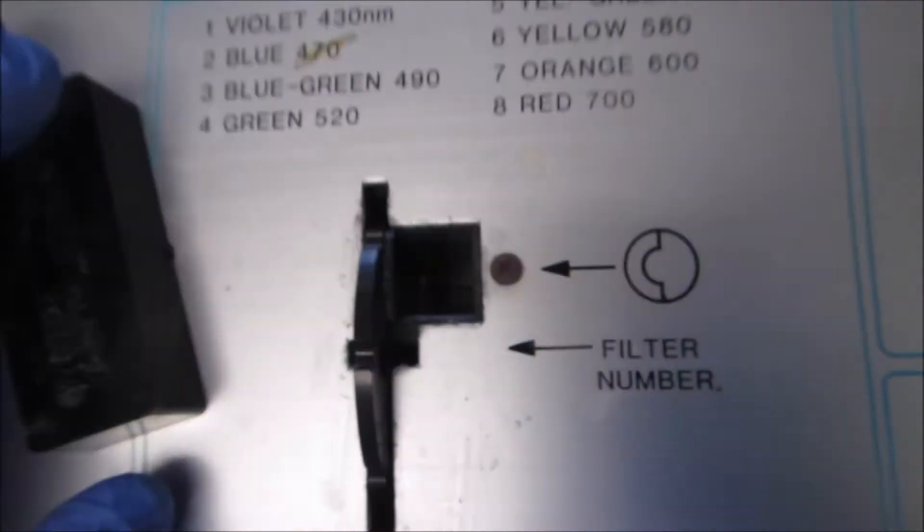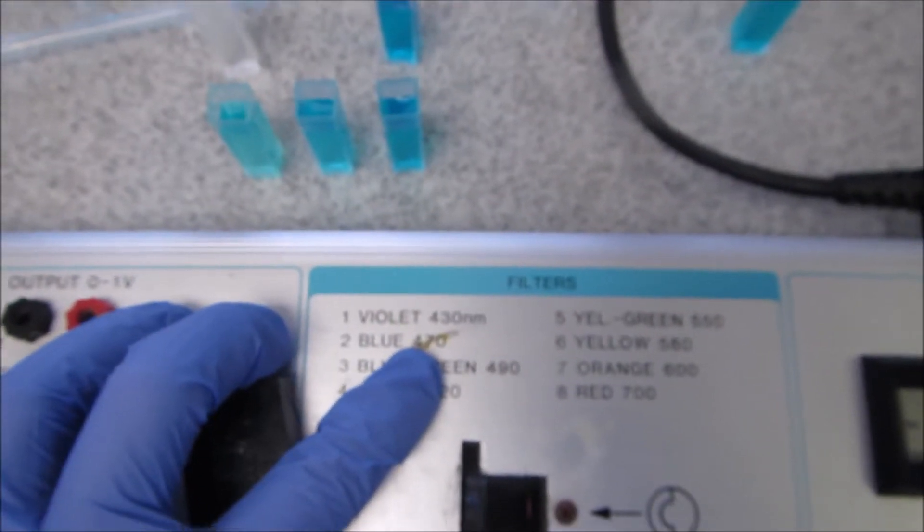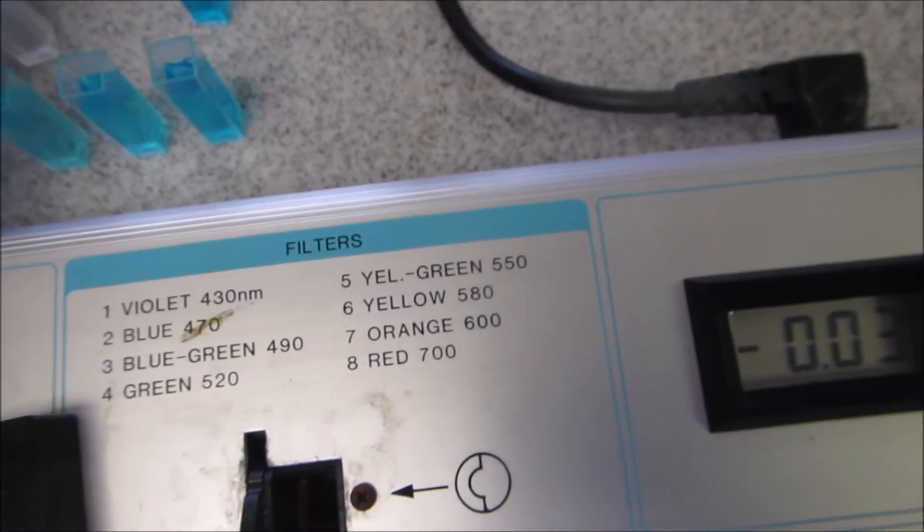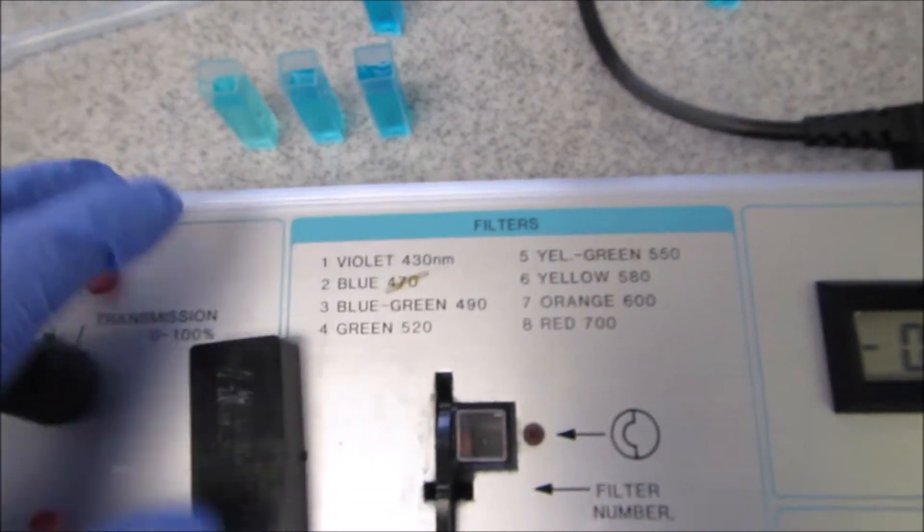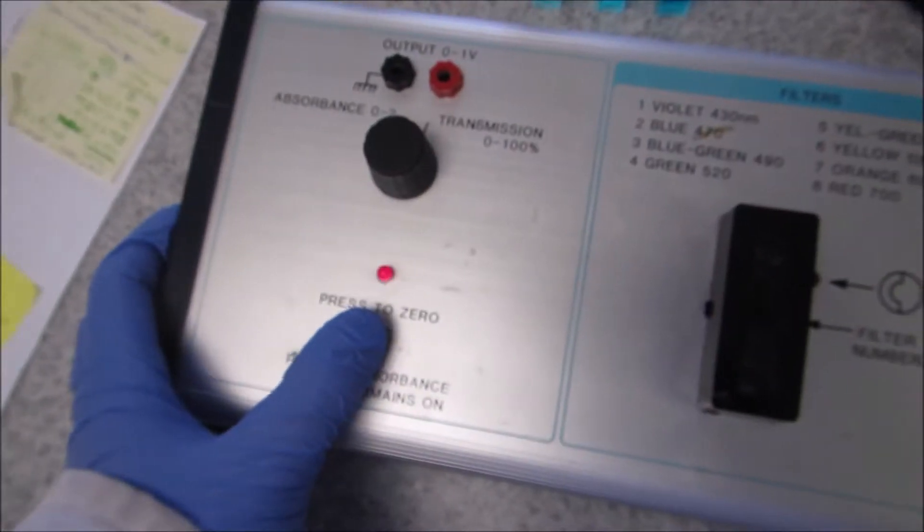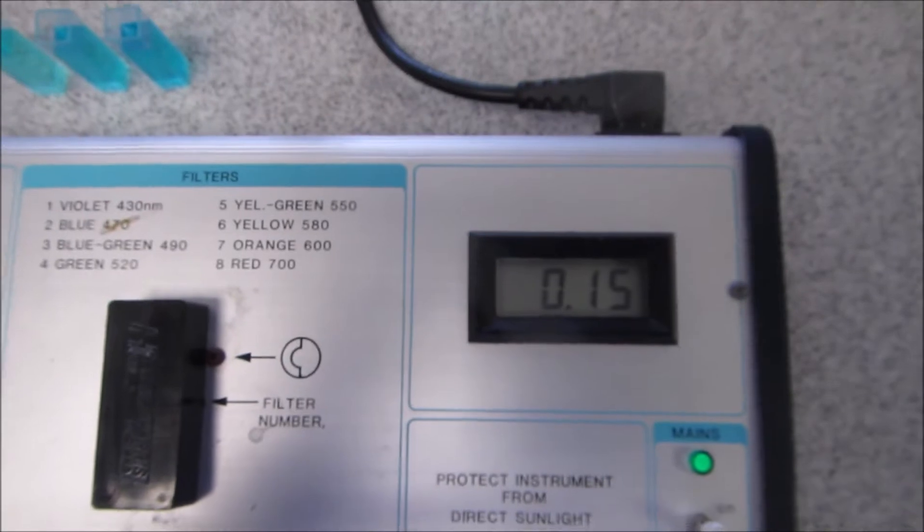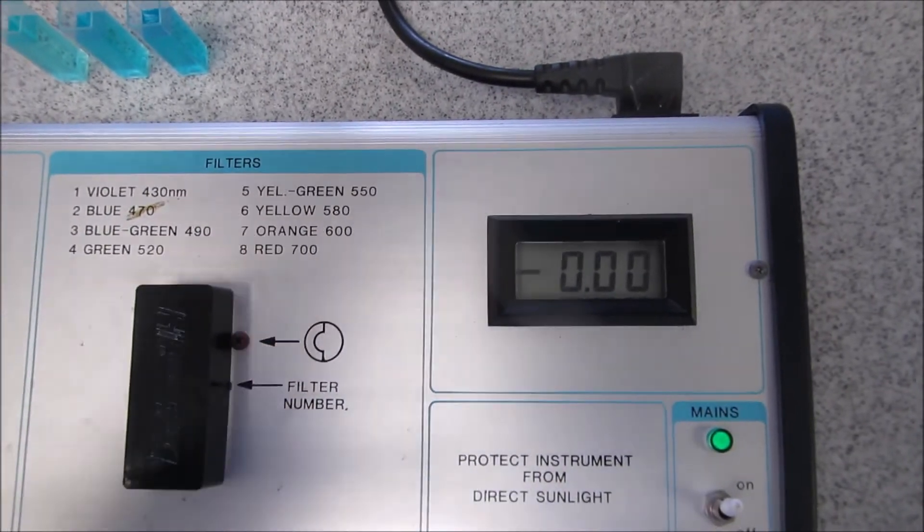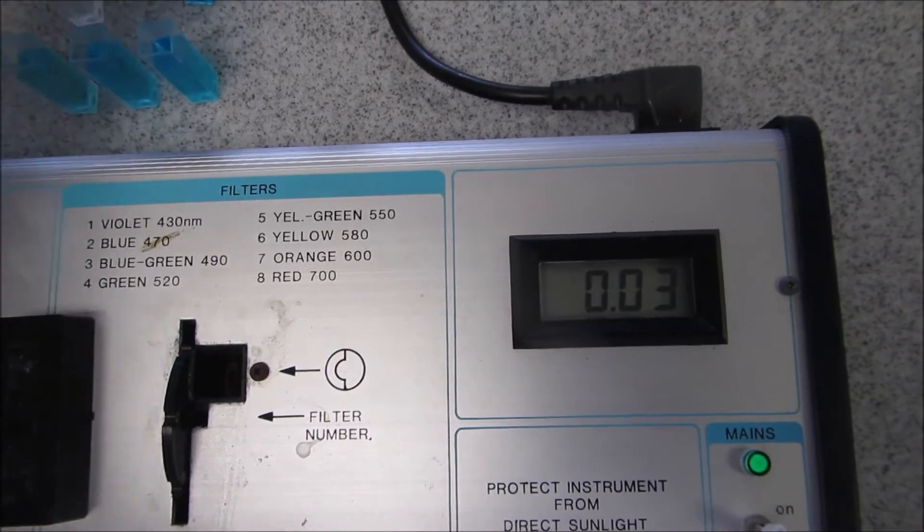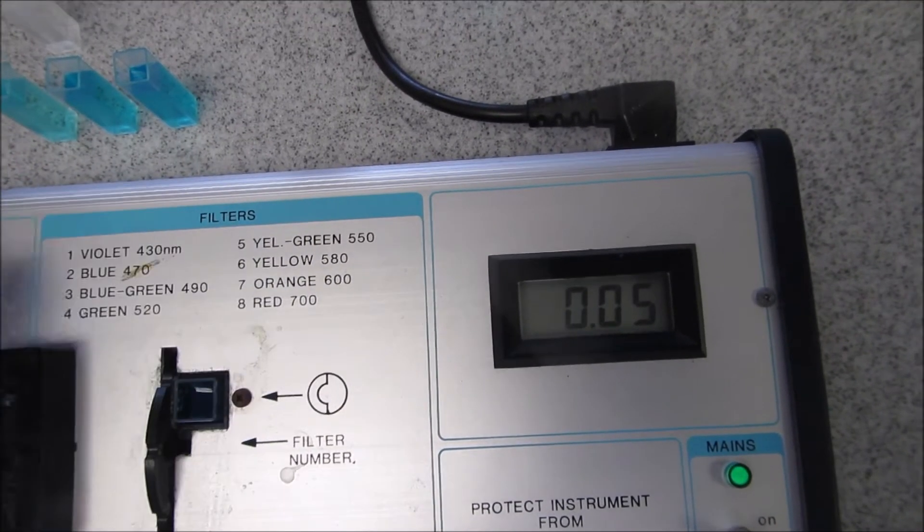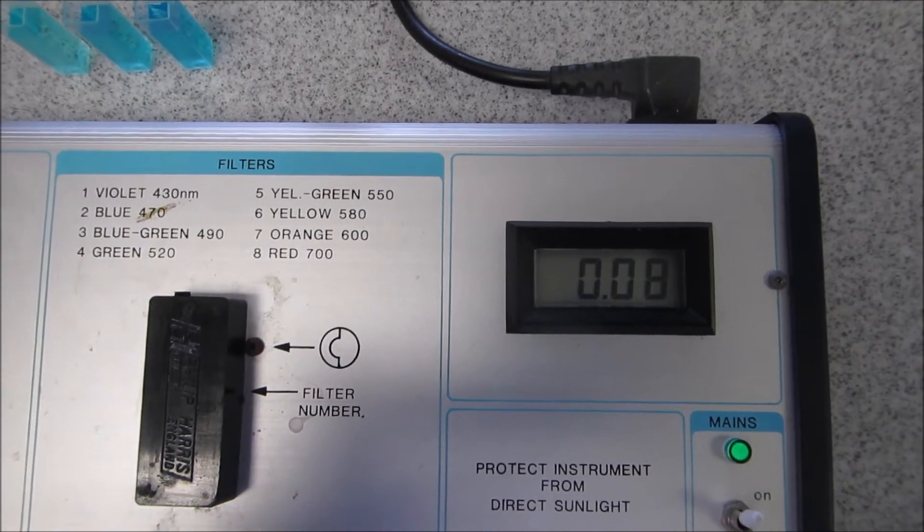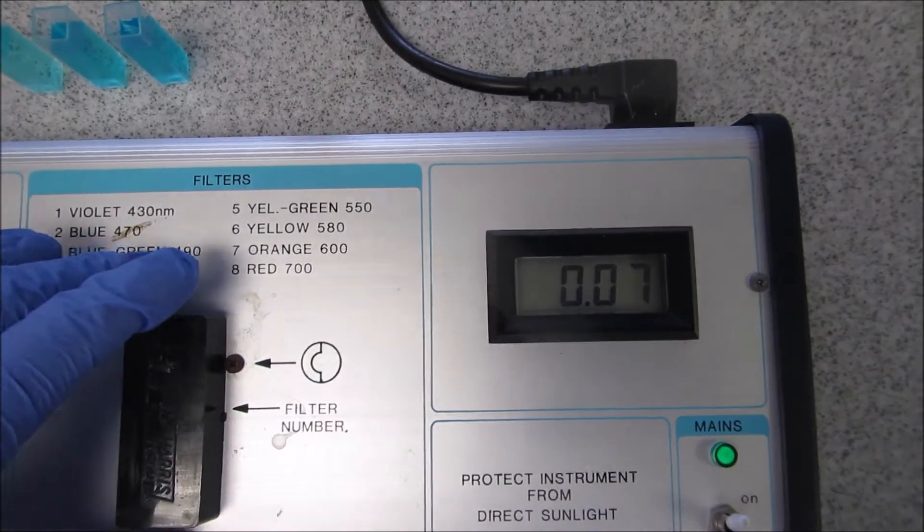We're now up to wavelength 2, which is 470 nanometers. I'm going to put in my blank, the deionized water, cover it, and press to zero. Once it's come down to zero I'll take out my blank, put in my 1 molar copper sulfate solution, and again you can see the reading. It's still fairly low.